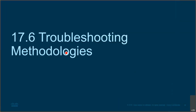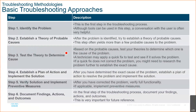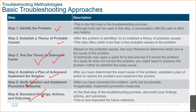Some troubleshooting methodologies to use as a network engineer: follow a process — first identify the problem, establish a theory of probable cause, then test the theory to determine the cause. Establish a plan of action — this is where Packet Tracer is very important. Then verify the solution. Document the findings, actions, and outcomes when you implement the solution. This is the proper way of doing things. Having a checklist makes your life easier and you tend to make fewer mistakes.